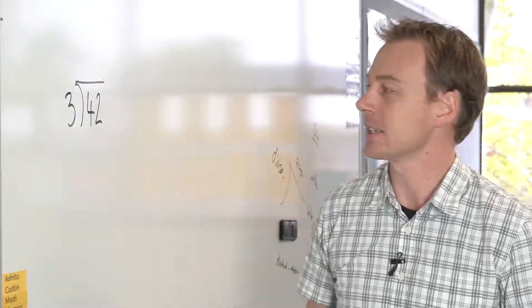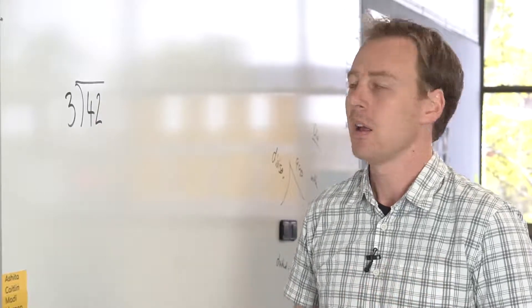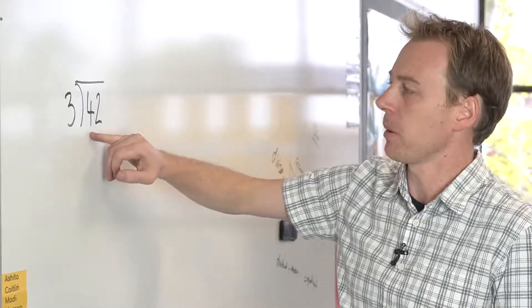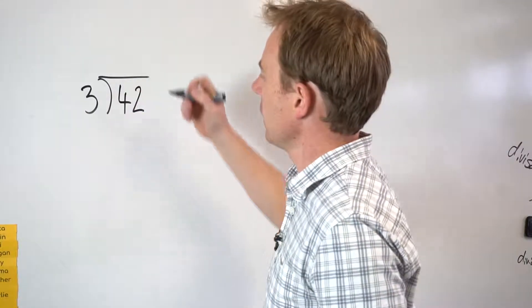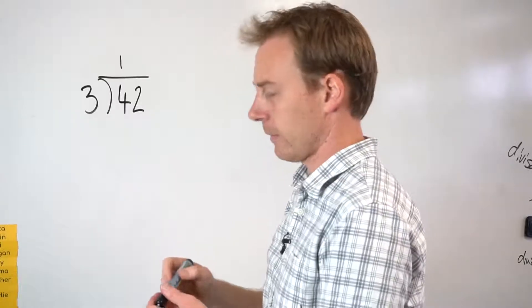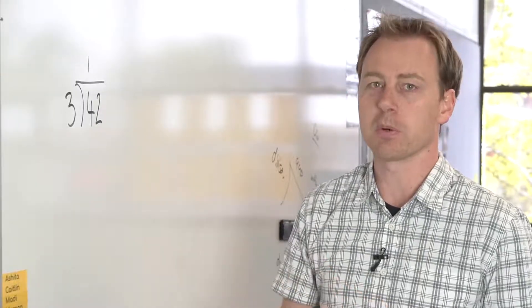Again, I start with the tens number or the biggest number that's in the number that I'm dividing. So I've got here 4, so 4 divided by 3 is 1. That idea that if I've got 4 lollies I can divide it between 3 people,